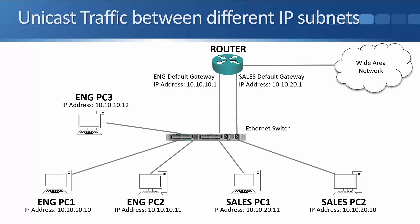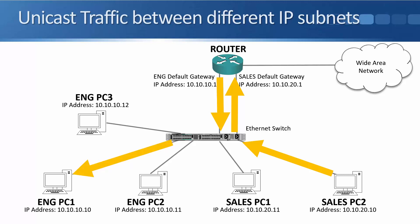For unicast traffic between different IP subnets — say a sales PC wants to talk to an engineering PC — sales PC2 sends some traffic into the switch. The switch sends it on to the router because the destination IP address is the engineering PC's IP address, but the destination MAC address is the sales PC's default gateway. The router routes the traffic over to the engineering subnet, sends it back down to the switch, and the switch forwards it to engineering PC1. Whether within the same or between different subnets, unicast traffic is always good for security and performance, and you can easily implement security policies on the router to limit traffic between your IP subnets.